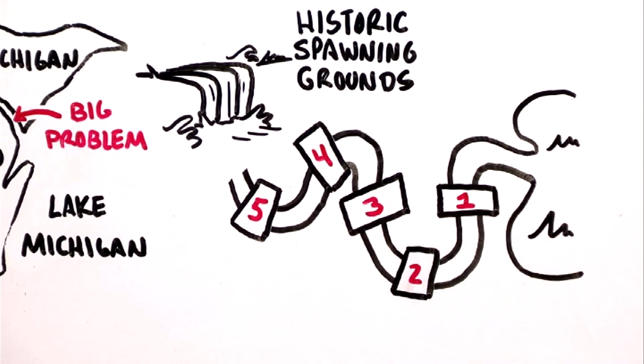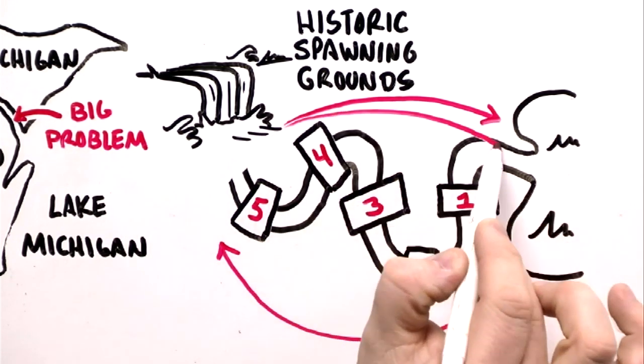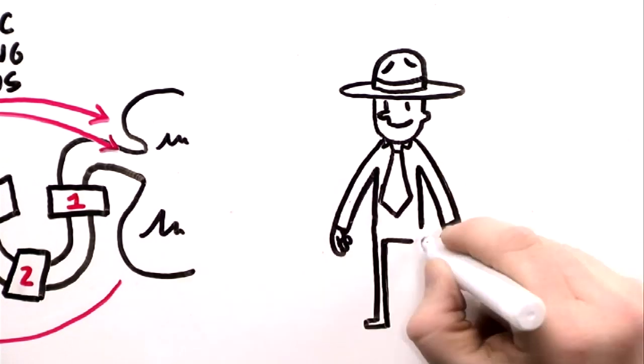For the sturgeon to thrive, they have to be able to make the round trip from lake to home river and back again, but they can't without some help from us.